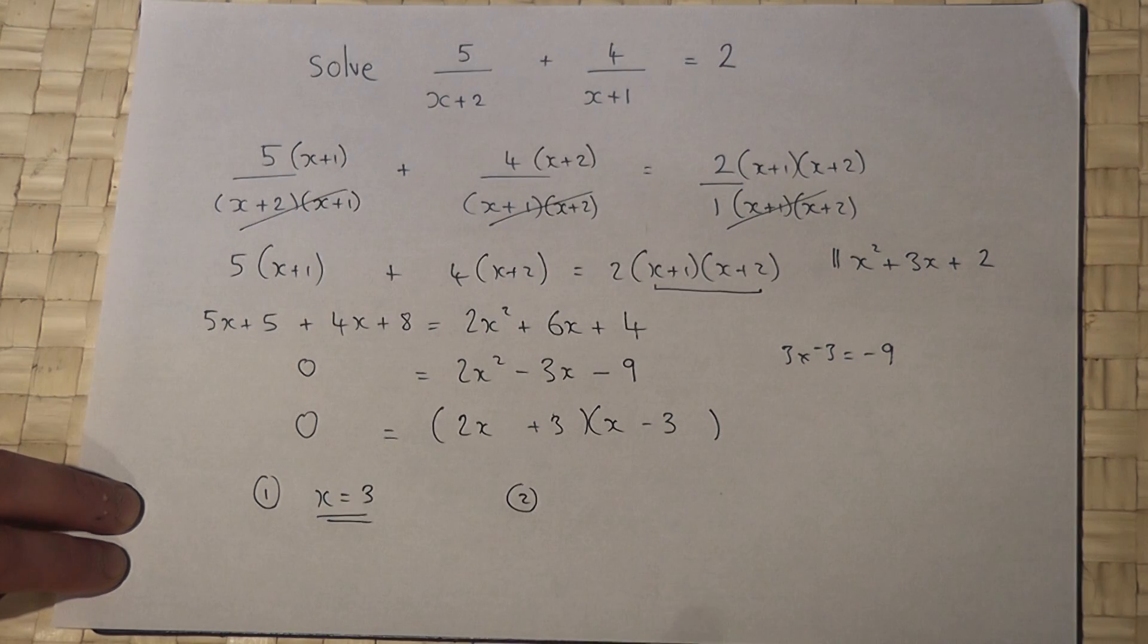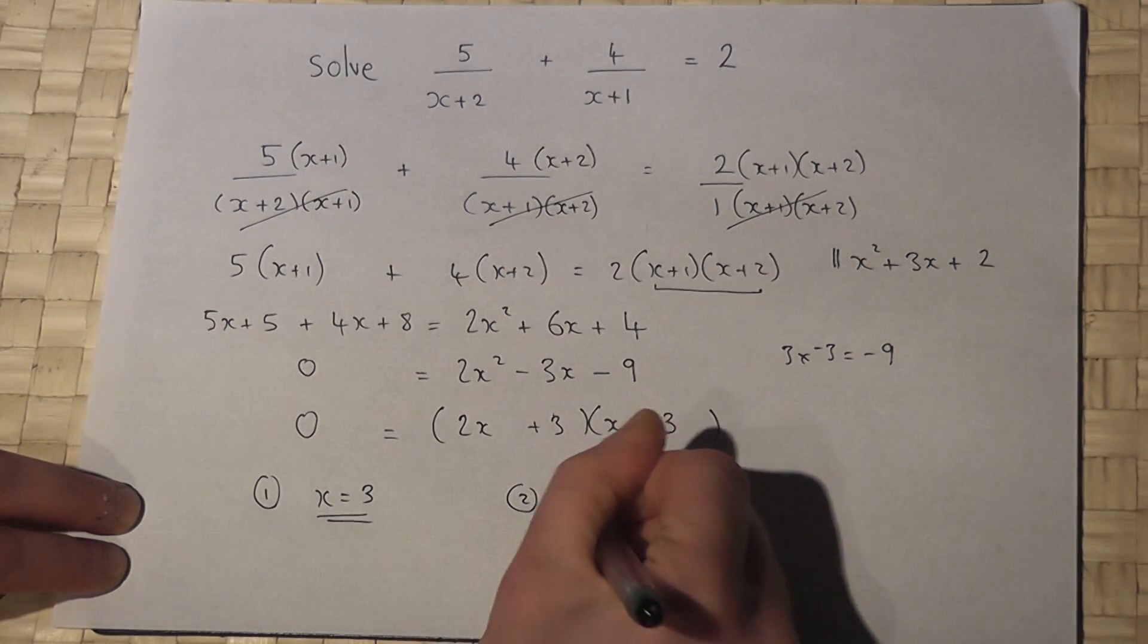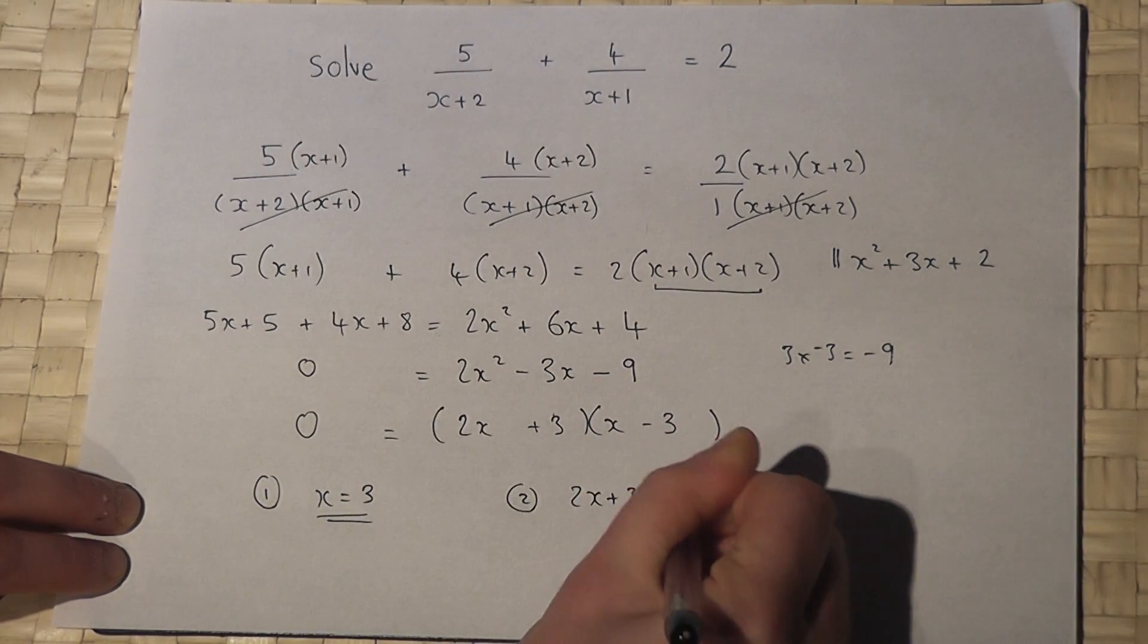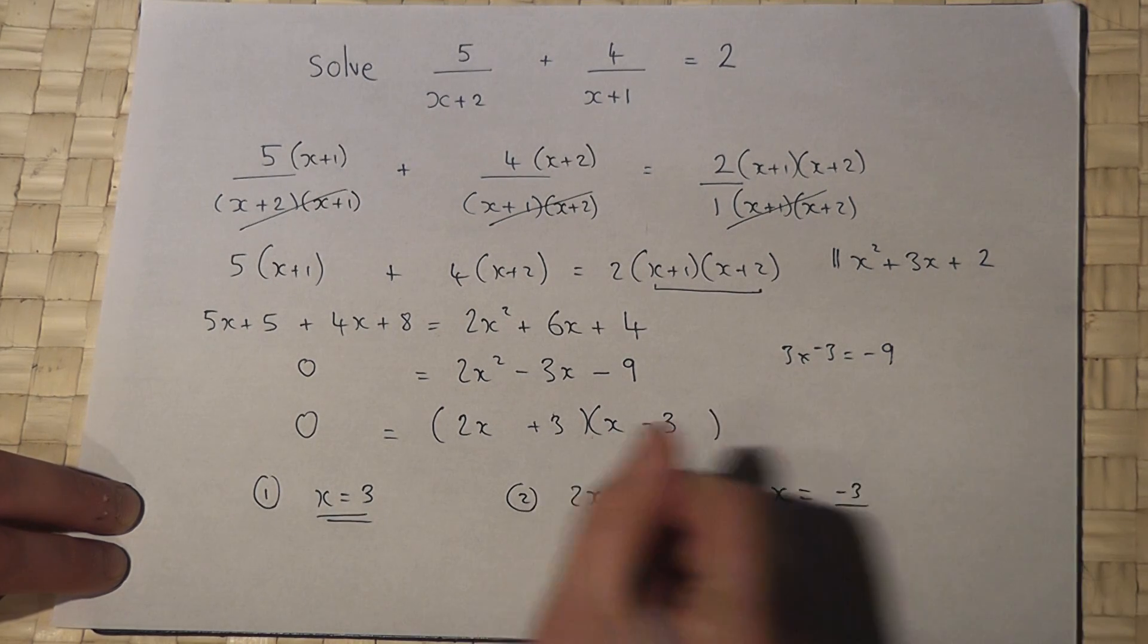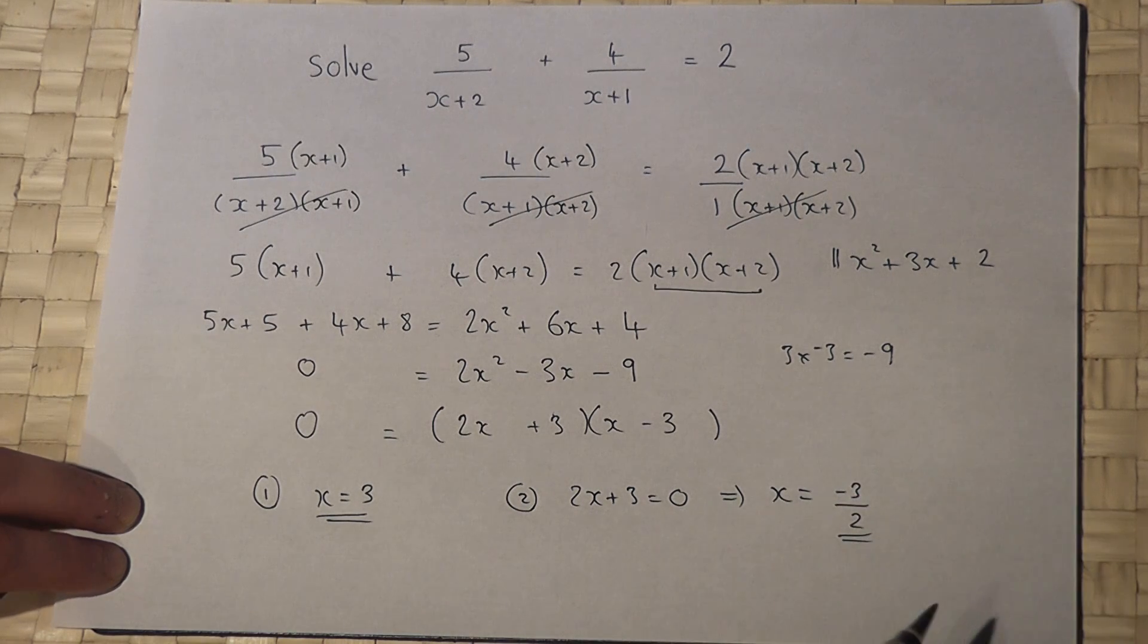Then, for the second solution, I solve where 2x plus 3 equals 0. So therefore, x equals minus 3 divided by the 2, or minus 1.5.